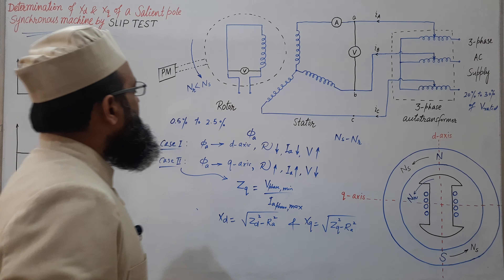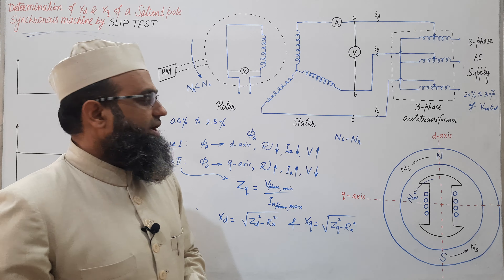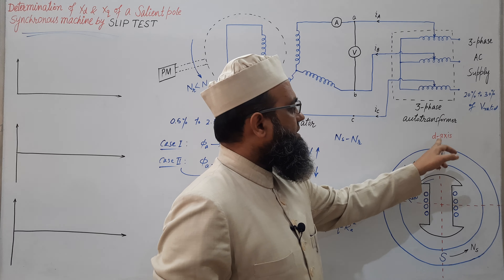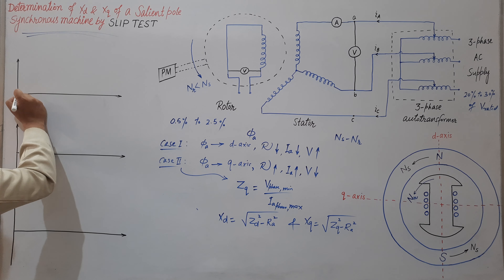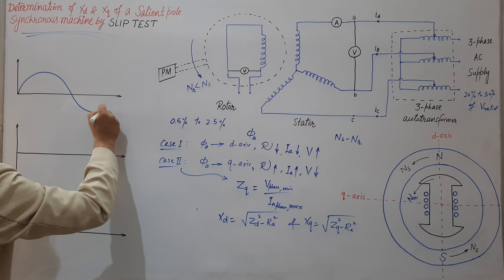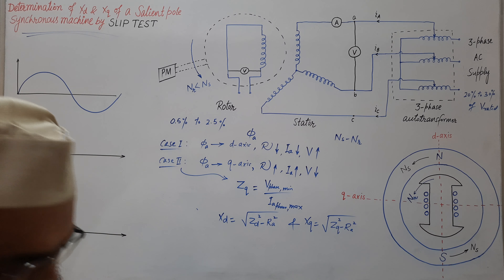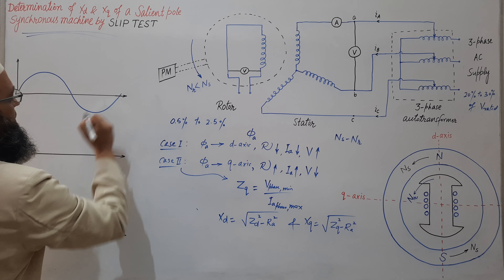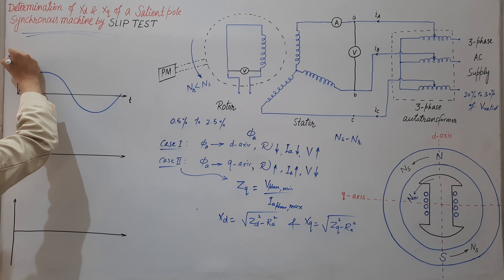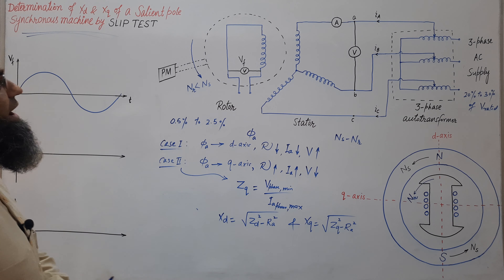There will be a range of this voltmeter reading between minimum and maximum. The minimum will be 0 when the axis of phi-a is aligning along the d-axis, giving 0, and then along the q-axis it is giving some maximum, then again some 0. Let us take T here and label this reading as Vf — voltage across the open-circuited field winding terminals.